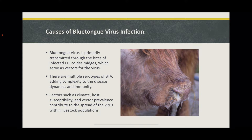Midges, the primary vectors of BTV, are influenced by environmental conditions. Climate factors such as temperature, humidity, and rainfall affect the abundance and distribution of this species, influencing the transmission dynamics of BTV. Changes in climate patterns can impact the geographical range and seasonal activity of these vectors. International trade and movement of livestock contribute to the spread of BTV, as infected animals or carrier states may introduce the virus to new regions. Import regulations and quarantine measures play a crucial role in preventing transmission.